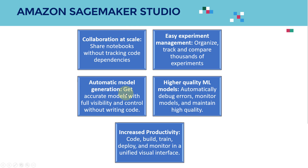Third is automatic model generation — you can generate accurate models with full visibility. The Autopilot AutoML feature lets you say 'here is my data, tell me which model I should use.' SageMaker Studio will train a series of models with different algorithms and tell you which is the best one and why — including which algorithm was used, what hyperparameters were applied. It's not a black box; there's a detailed report associated with it, which is extremely powerful.